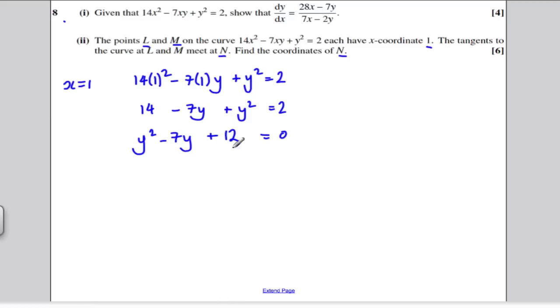Factorize: two numbers that multiply to positive 12 and add to negative 7. That would be (y - 3)(y - 4) = 0. So we know from this that y = 3 or y = 4. So our coordinates, L and M—let's say L is the coordinate (1, 3) and M is the coordinate (1, 4).